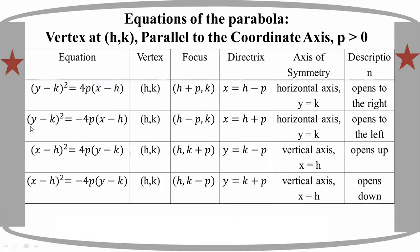y squared equals 4pH, y squared equals minus 4pH, x squared equals 4pY, y squared equals minus 4pY. The one that is translated gives the equation of the parabola equal to minus 4pY, because it is translated into the equation.